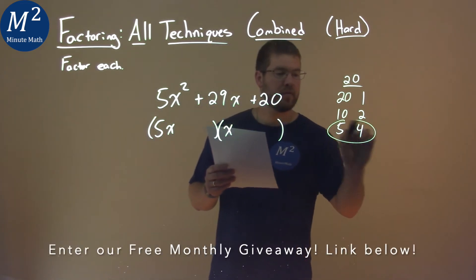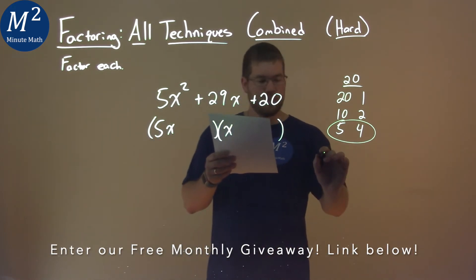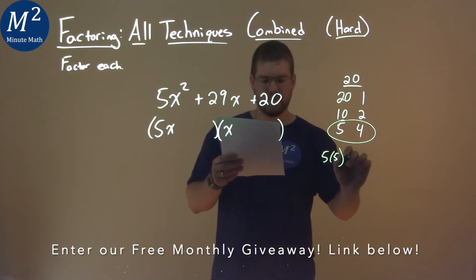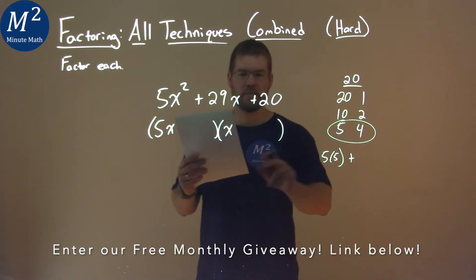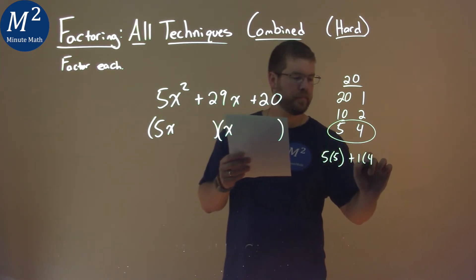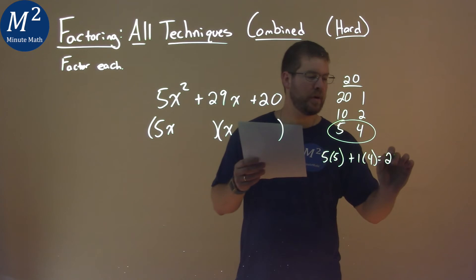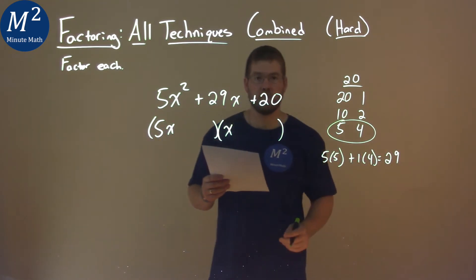The 5 and the 4. 5 times 5 plus, so 5 times the 5 plus the 1 times the 4 comes out to be a 29, right? 5 times 5 is 25 plus 4, 29.